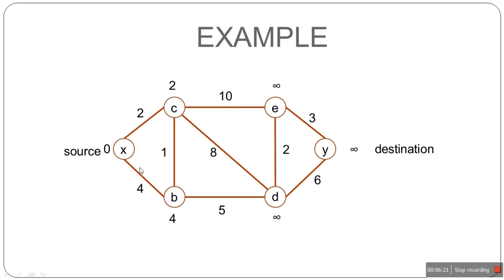We are done with all neighbors of X, so we mark X as visited. Now we check which unvisited node has the smallest value: C has 2, B has 4 — so C is smallest. We draw the first step of our shortest path: X to C. Next, we check the connected neighbors of C, which are B, D, and E. Starting with E: the distance from X to E via C is 2 plus 10, which equals 12. Since 12 is less than infinity, we assign 12.